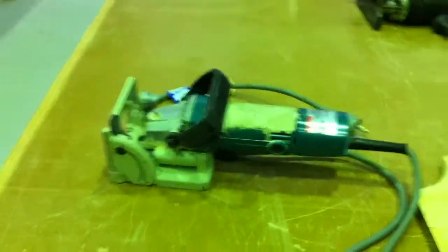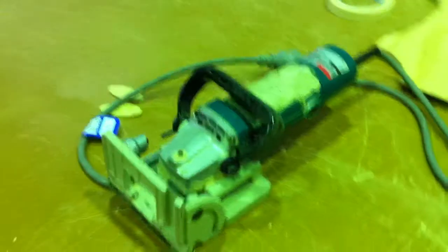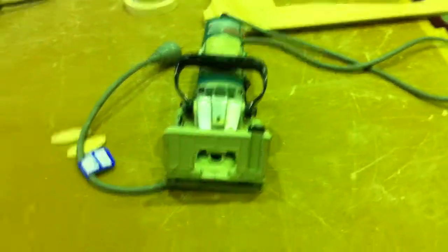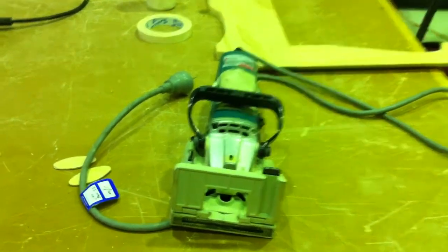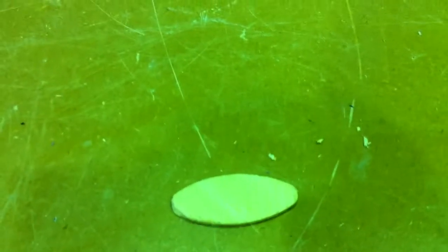Now to connect our legs to our sides we use a machine called a biscuit jointer, or biscuit cutter, which puts grooves into the two pieces of timber that need to be joined together. In those grooves sit some biscuits that look like this.